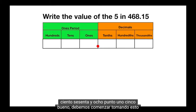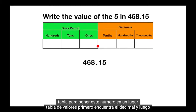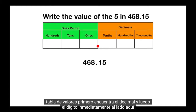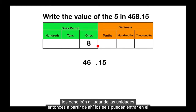We should start by taking this number and putting it on a place value chart. To put this number on a place value chart, first find the decimal. Then the digit immediately next to it — here the 8 — will go into the ones place.